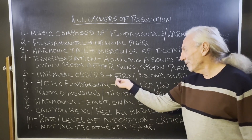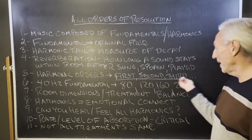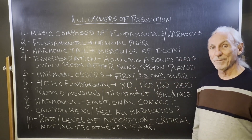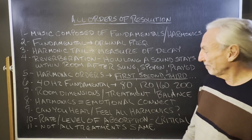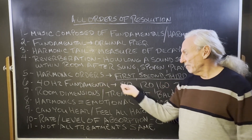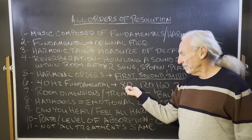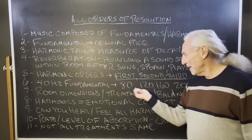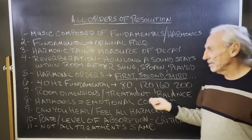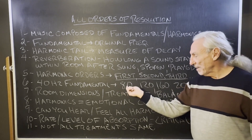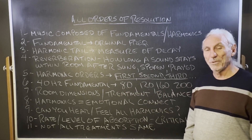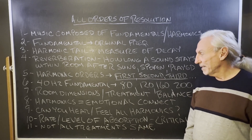Harmonic orders — first, second, third, fourth, fifth — there are lots of orders to the harmonic. We take a fundamental frequency of 40Hz, we have our first order at 80, then 120, 160, and 200. You just keep adding 40 — the fundamental — to produce the order of harmonic.